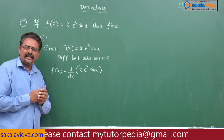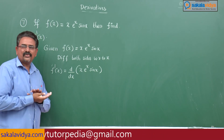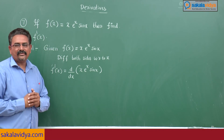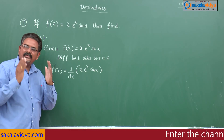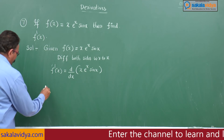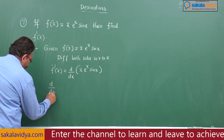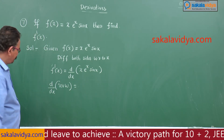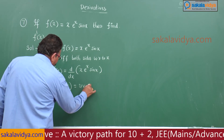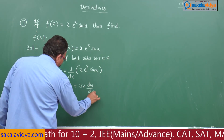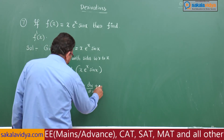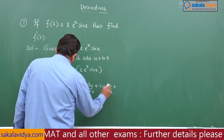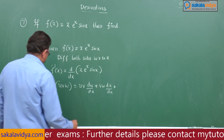We have a formula — even for more than three functions we can find derivatives using logarithmic differentiation — but here let us use the UVW formula. Recall: d/dx(uvw) = uv · dw/dx + vw · du/dx + uw · dv/dx.